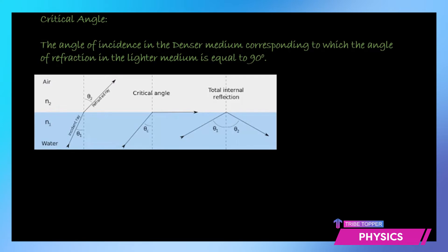Let's try to understand what we mean by critical angle. As you can see in this diagram, when a ray travels from one transparent medium to another transparent medium, it refracts and bends away or towards the normal depending on the densities of the two media. Here we can see that a ray is traveling from water to air — water is the denser medium and air is the lightest medium — so the ray, the moment it enters the air, will speed up and bend away from the normal.